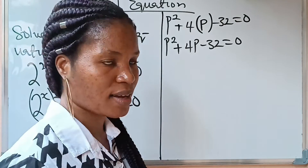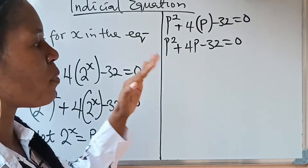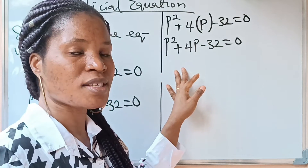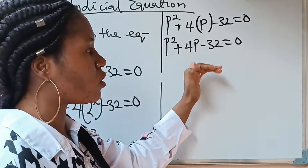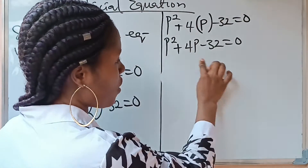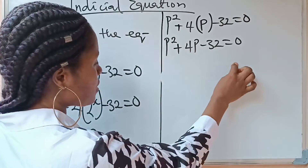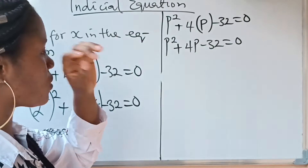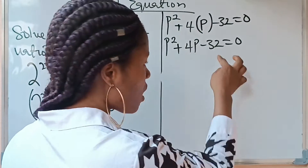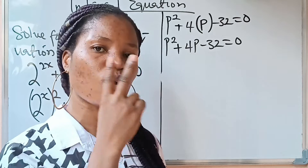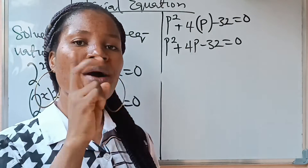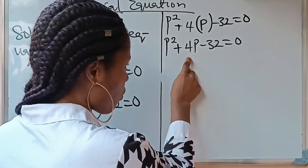We are going to factorize it to get the values of p, and from there get the value of x. For the benefit of those who don't know how to factorize, to get the value of p you need to find two factors of minus 32 — two numbers you multiply to get minus 32 — such that when you add those two factors you get plus 4.